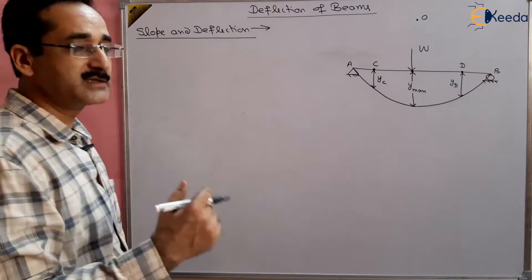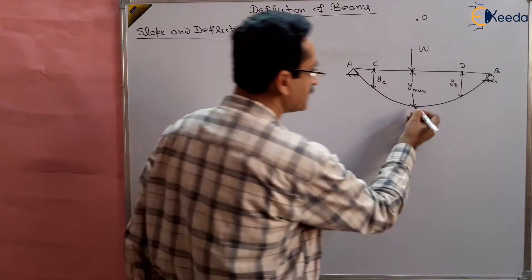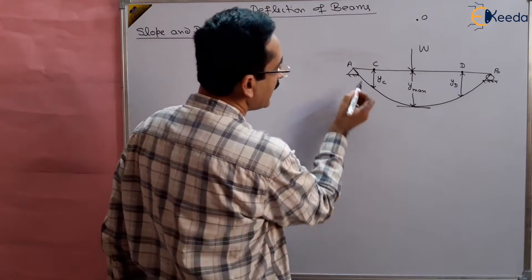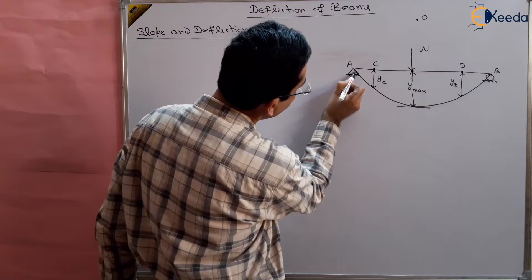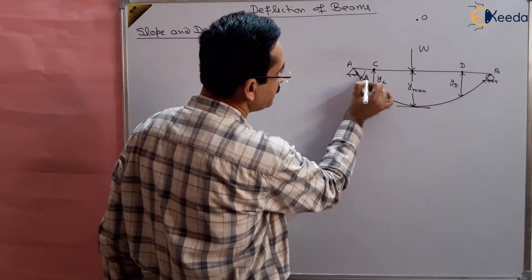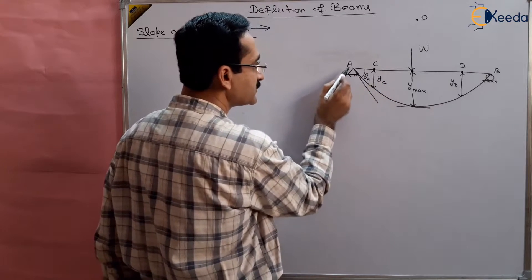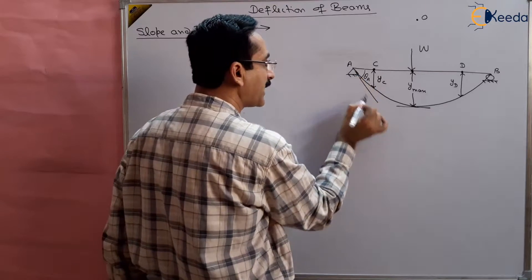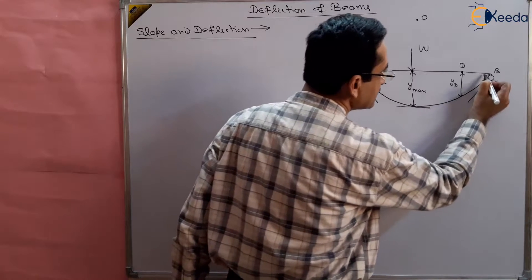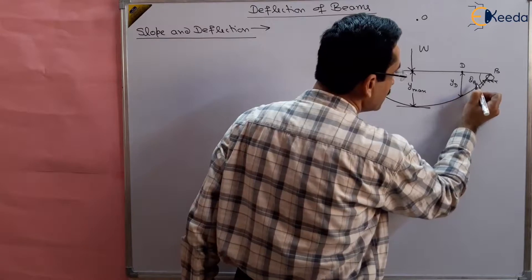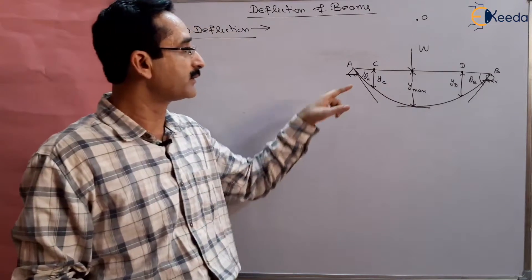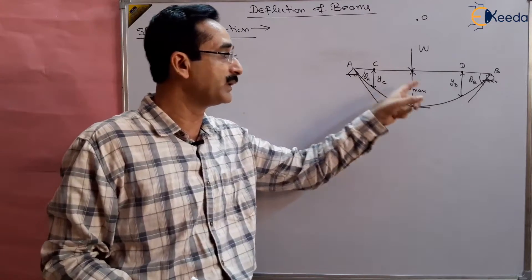What is the slope? Slope is the tangent at a certain point. At this point, this is the slope, and at the center the slope is zero. At certain points there may be another slope. You can see this is the slope at point A — theta A. The slope is maximum at the supports. At the supports the slope is maximum — this is theta B. This slope is also important because if this slope is higher, deflection will be higher, and due to maximum slope the beam may fail.